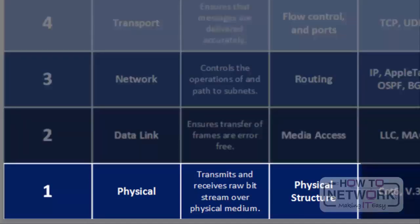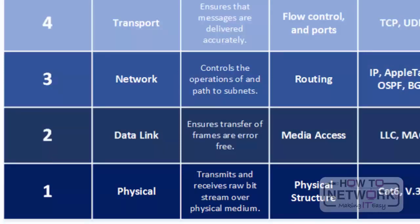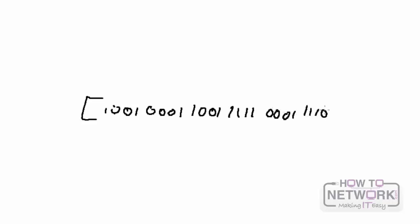Finally, the physical layer conveys the actual bit stream — electrical impulse, light, or radio signal — through the network at the electrical or mechanical level. It provides the hardware means of sending and receiving data on a carrier, including defining the cable type, network interface cards, and other physical aspects. At the physical layer, bits are heading onto the wire as binary 1s and 0s. All information from layers 2 through 7 is transmitted as binary on or off over the wire, and when it reaches the destination it's decoded by the upper layers.